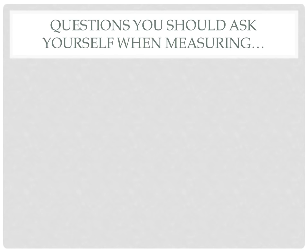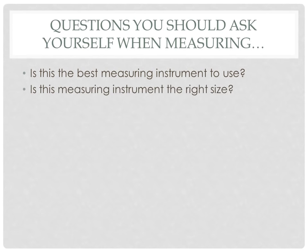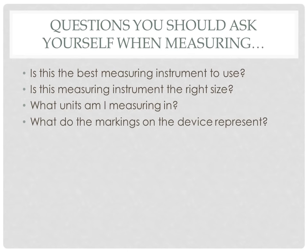Some questions you should ask yourself whenever you are measuring anything: Is this the best measuring device or instrument to use — is it going to measure appropriately? Is the measuring instrument the right size? For example, if you're going to measure a very small volume of liquid, you're not going to want to use a very large graduated cylinder. What units am I measuring in? Every measuring device is marked with the units it uses. What do the markings on the device represent? Some instruments are marked very clearly; some are almost deceiving.